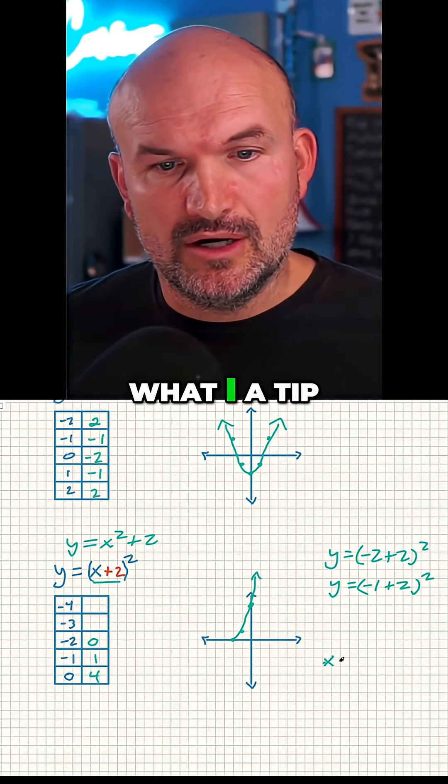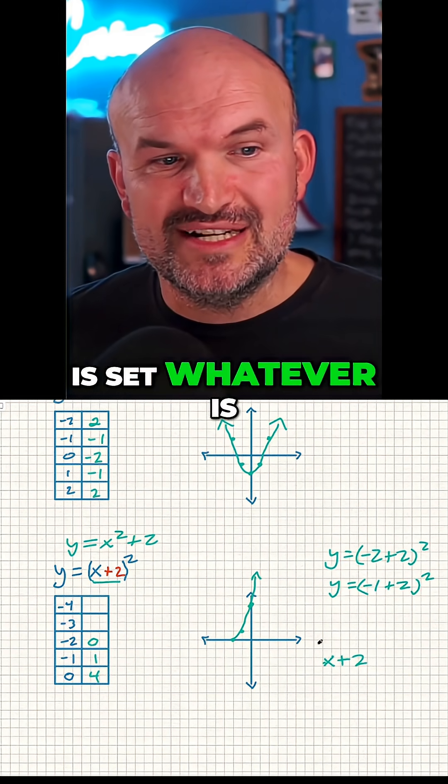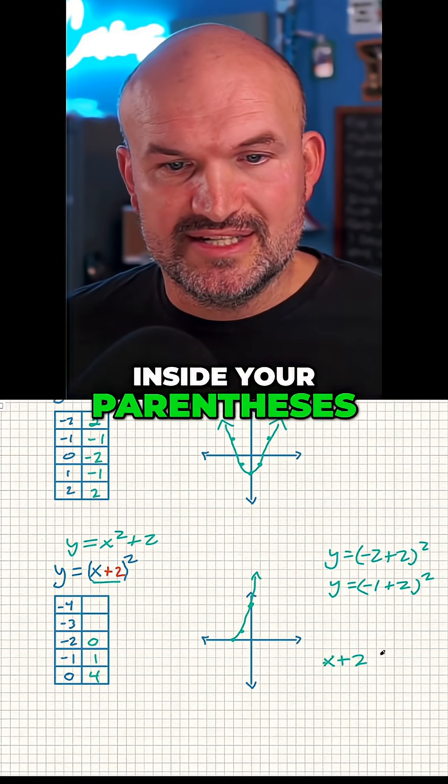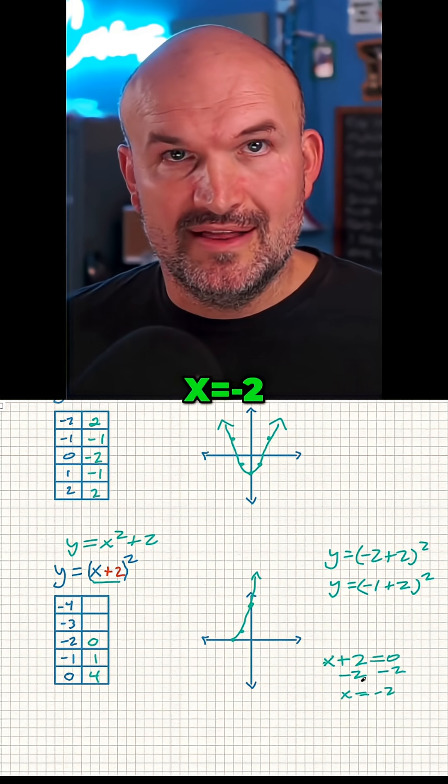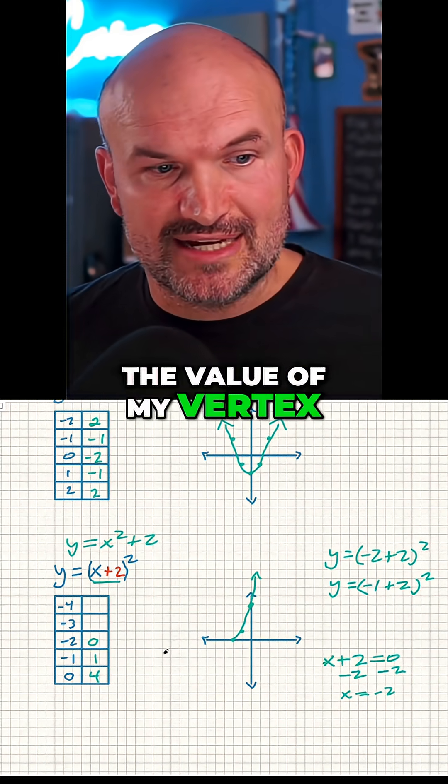A tip that you can use is to set whatever is inside your parentheses equal to zero, and then solve. X equals negative two - that is going to be the value of my vertex.